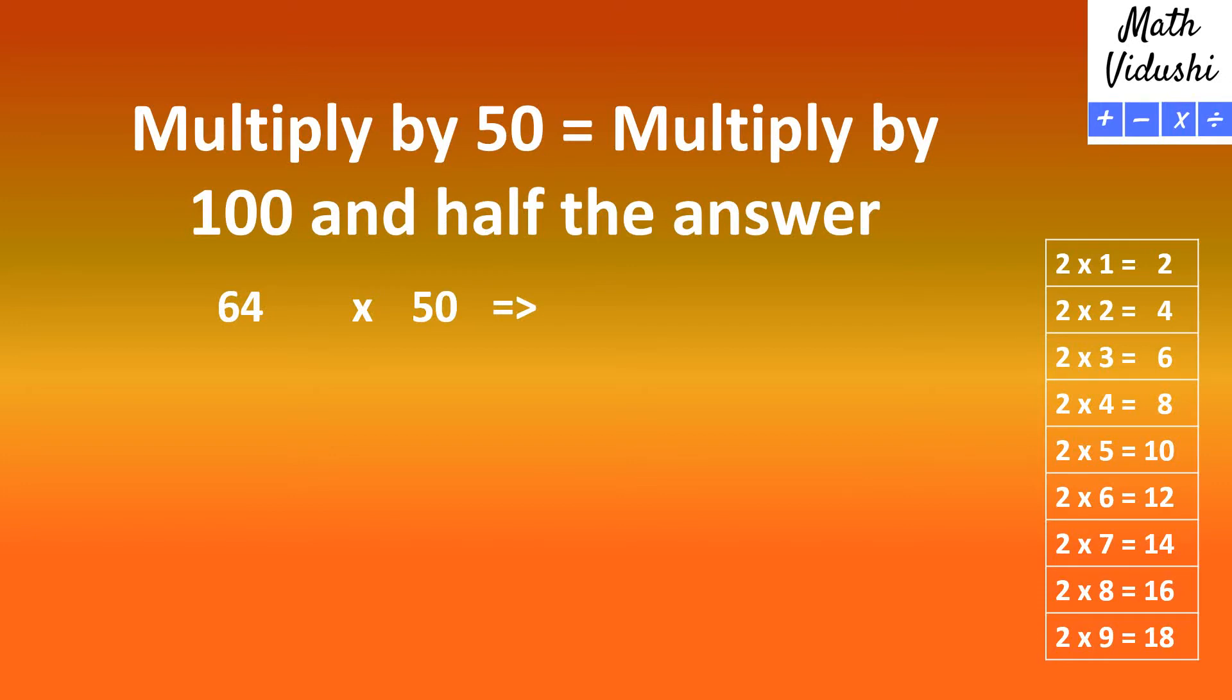Let's try 64 multiplied by 50. First, multiply the number by 100 to get 6400. Then divide the answer by 2 to get 3200. So 64 multiplied by 50 is 3200.